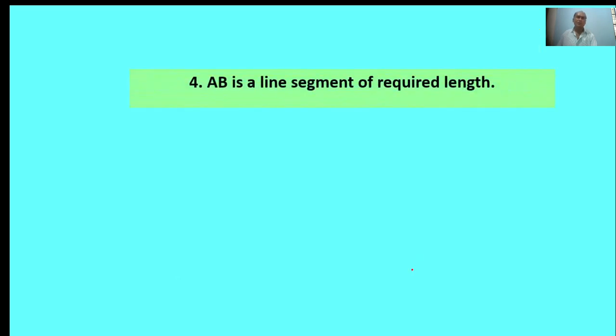Fourth: AB is a line segment of required length. Yes, AB is a line segment of 4.7 centimeters required length line.